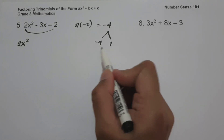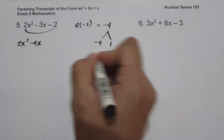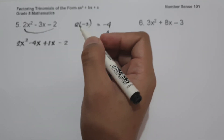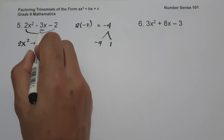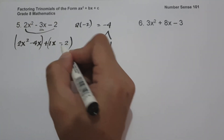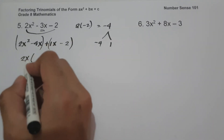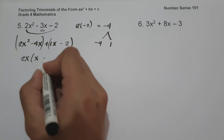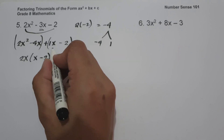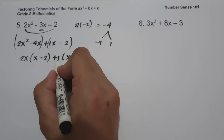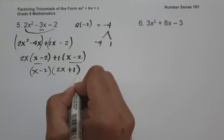So let us write 2x squared, then replace negative 3x with negative 4x and positive 1x. We then factor by group. The GCF of 2x squared and negative 4x is 2x, giving us 2x times (x minus 2). The GCF of 1x and negative 2 is 1, giving us 1 times (x minus 2). Since we have (x minus 2), the other factor will be (2x plus 1). This will be our answer.